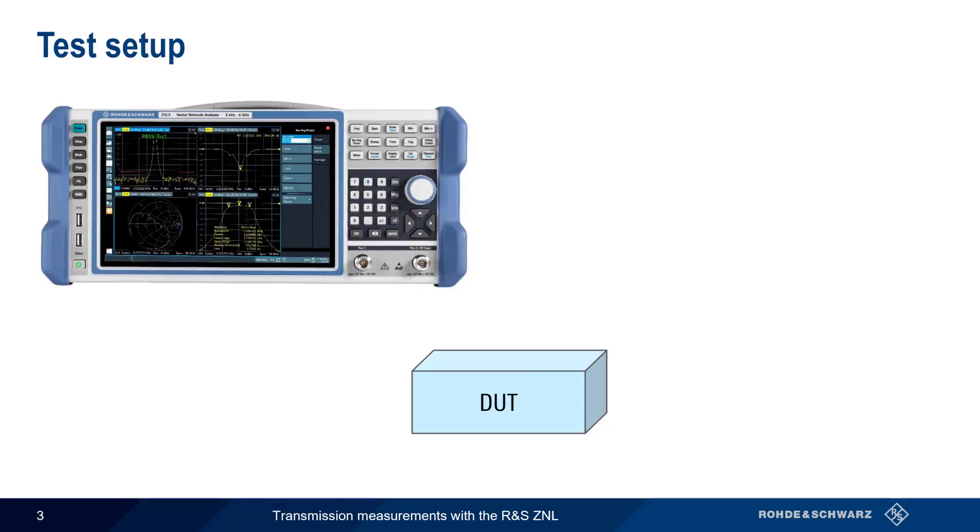The typical test setup for two-port measurements is very simple. We just connect the two ports on our ZNL to the two ports on our Device Under Test, or DUT.